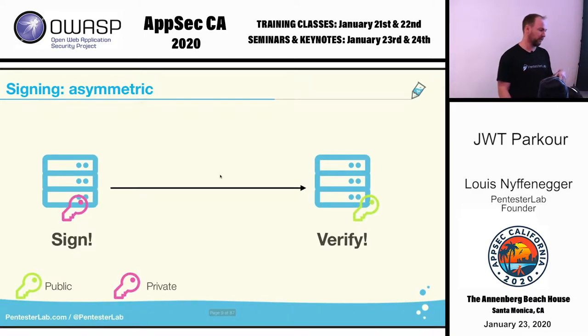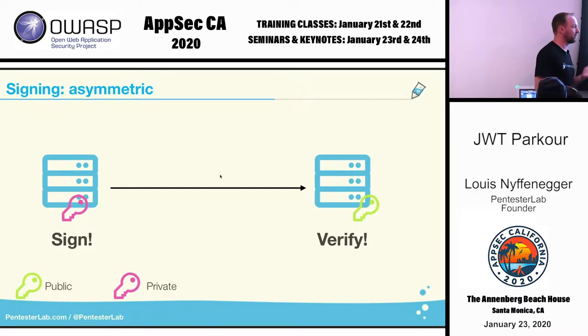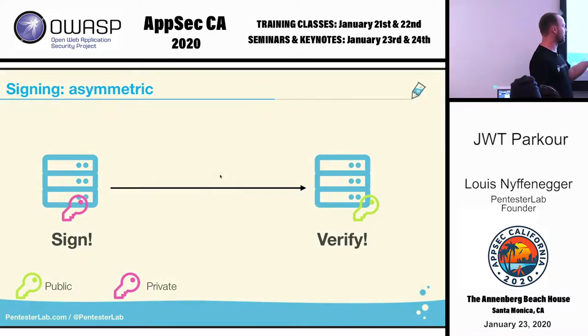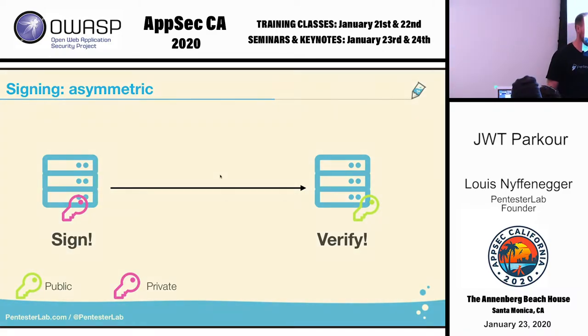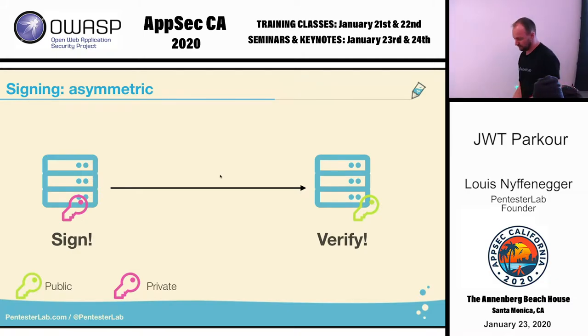What people often do is use asymmetric. The person signing just needs a private key, and the person verifying just needs a public key. So it's a lot better.